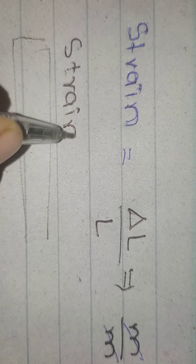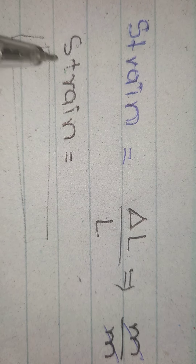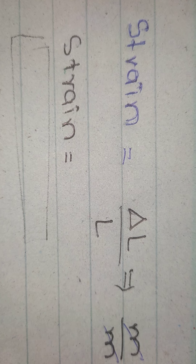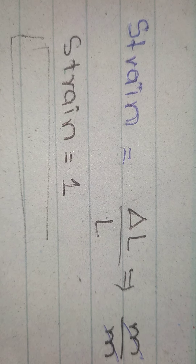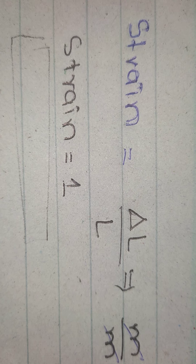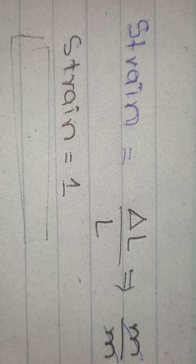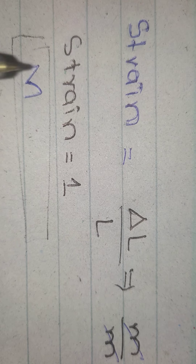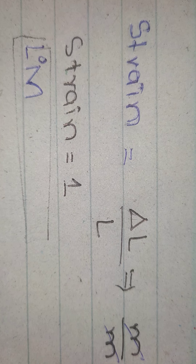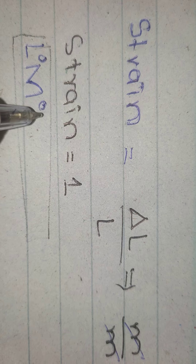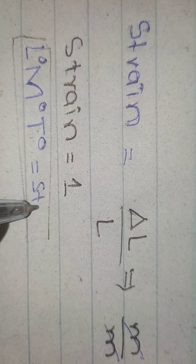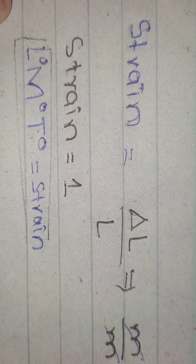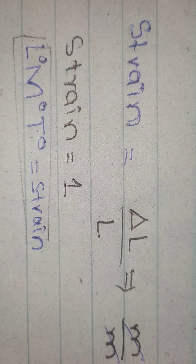Meter and meter will cancel. This means there is no unit of strain. There is no unit and there is no dimension of strain in the conventional sense. But in MCQs, when you are asked to find the dimension of strain, the answer is L⁰, M⁰, and T⁰.